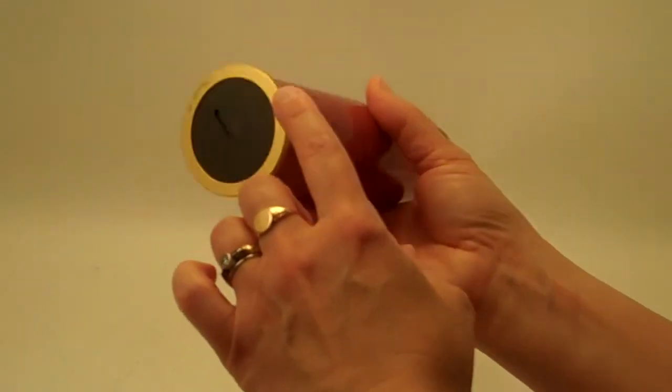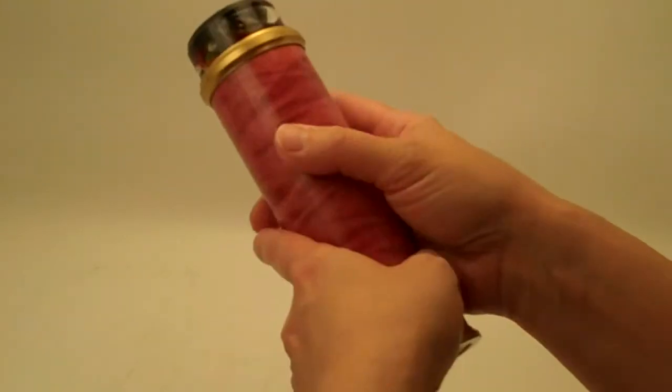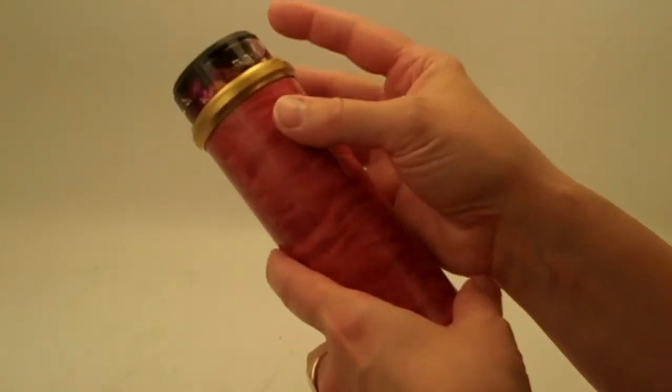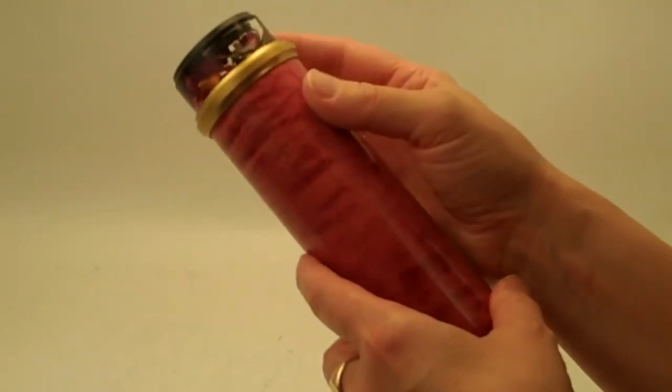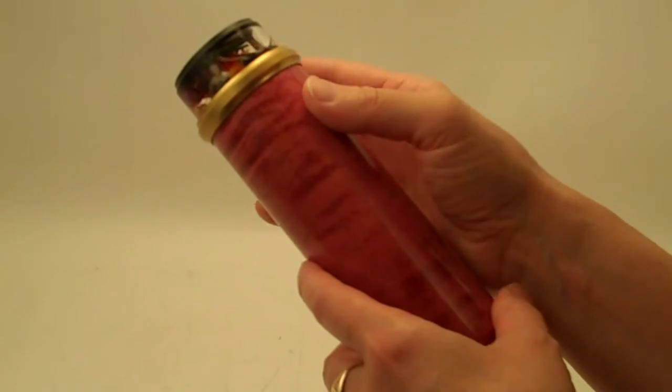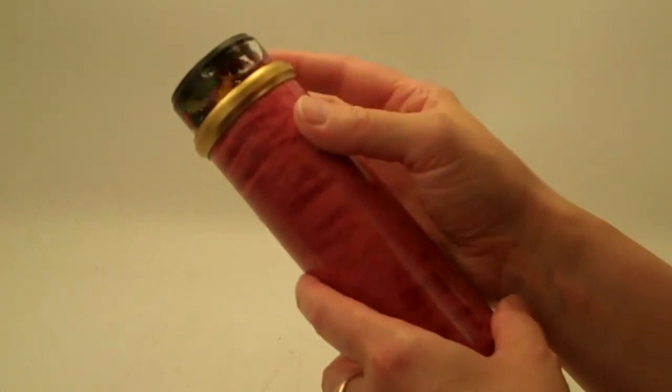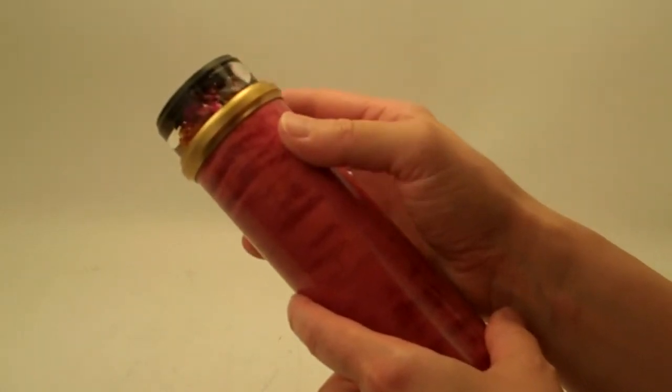The kaleidoscope itself is called Garden Gazer, and that comes from its object cell and what you see in here is an oil-filled object cell that is filled with freeze-dried flowers. The vibrancy in these flowers is just exquisite.